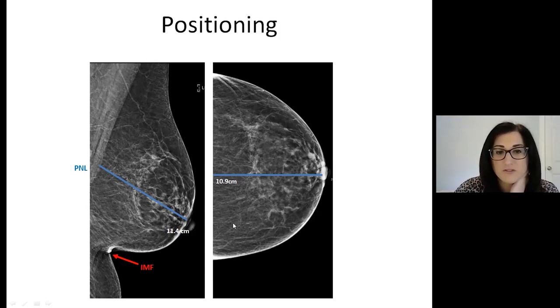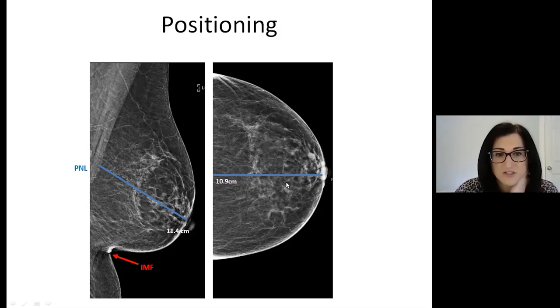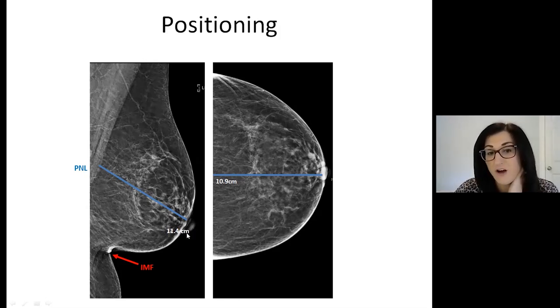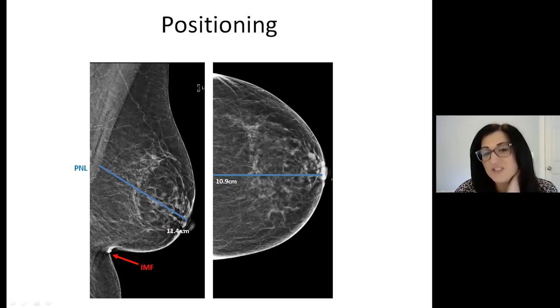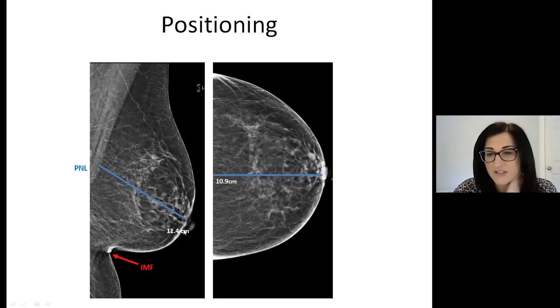We also have good retroglandular fat here and good separation of the anterior and posterior tissue. The nipple is in profile on one view, the MLO here — not as much on the CC — but as long as it's in profile on one view on each side, that's all you need.